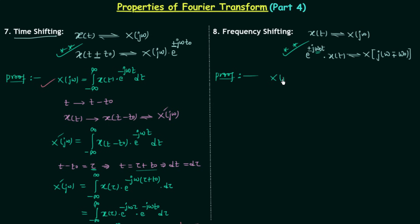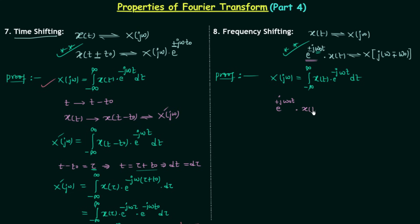To prove this property, I write the Fourier transform as the integral from minus infinity to infinity of x(t) multiplied by e^(−jωt) dt. As we are performing the frequency shifting operation, we multiply e^(jω0t) to x(t), taking the case of a positive sign. For this new signal, the Fourier transform is X(jω′). The new Fourier transform uses the signal e^(jω0t)·x(t) multiplied by e^(−jωt) dt.